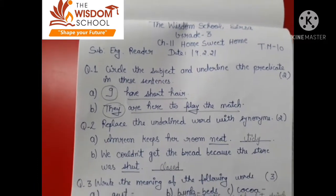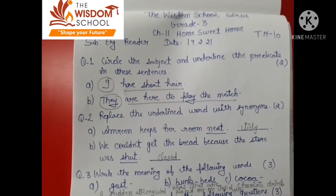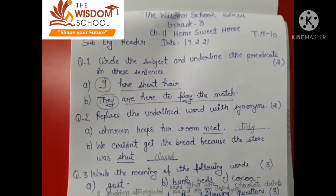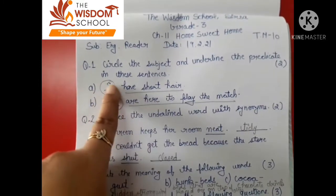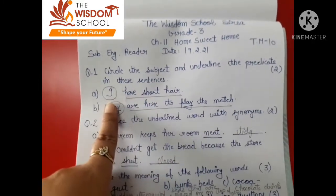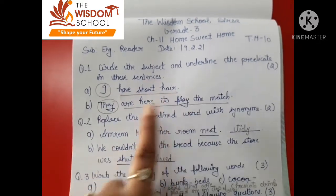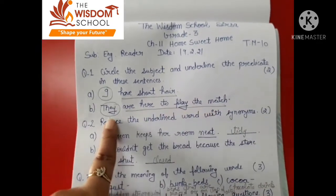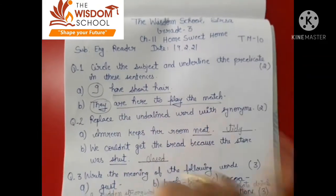So firstly I will give you the solution. Question number one: Circle the subject and underline the predicate in these sentences. I have shot here — your subject is 'I', and 'have shot here' is your predicate. They are here to play the match — 'They' is the subject, and 'are here to play the match' is the predicate.